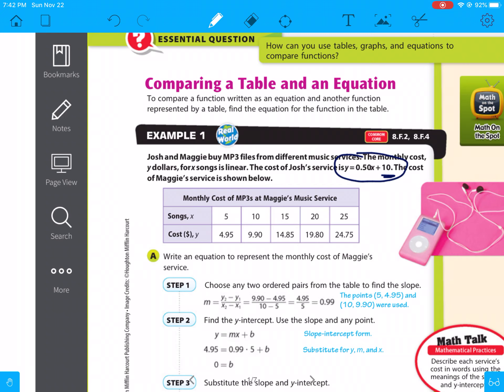Now, Maggie's, what you're going to have to do is change in y divided by change in x. So here we have 5, 4.95, and then 10, 9.90. So they did 9.90 minus 4.95 divided by 10 minus 5, which is 4.95 over 5 equals 0.99.